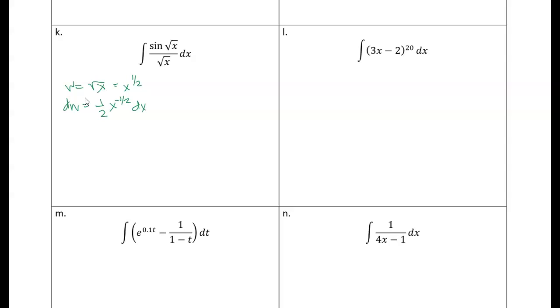And x to the minus one-half is just one over square root of x. So we can multiply both sides by two, so dw equals one over square root of x dx. You can see the substitution that we're going to make now.